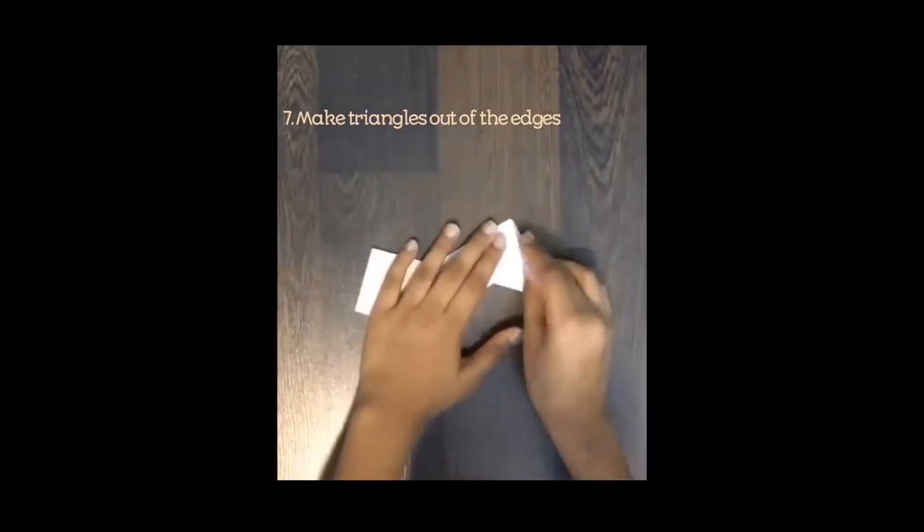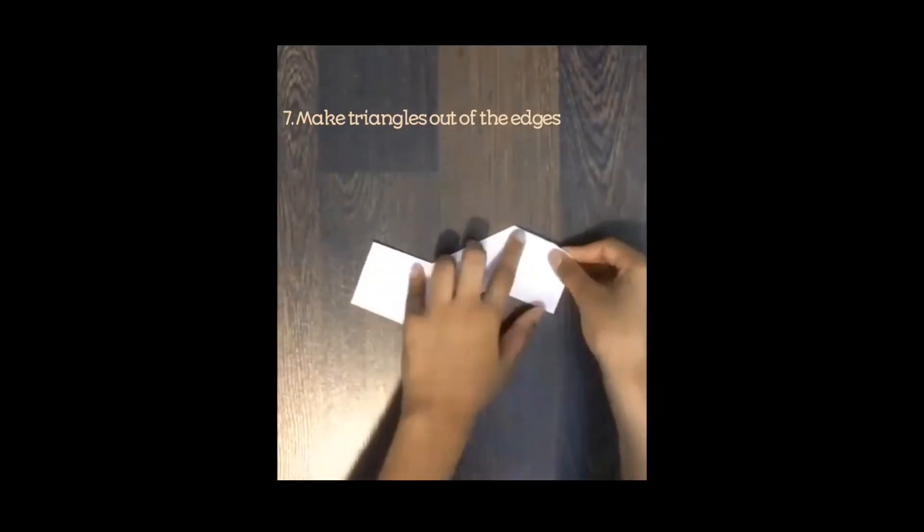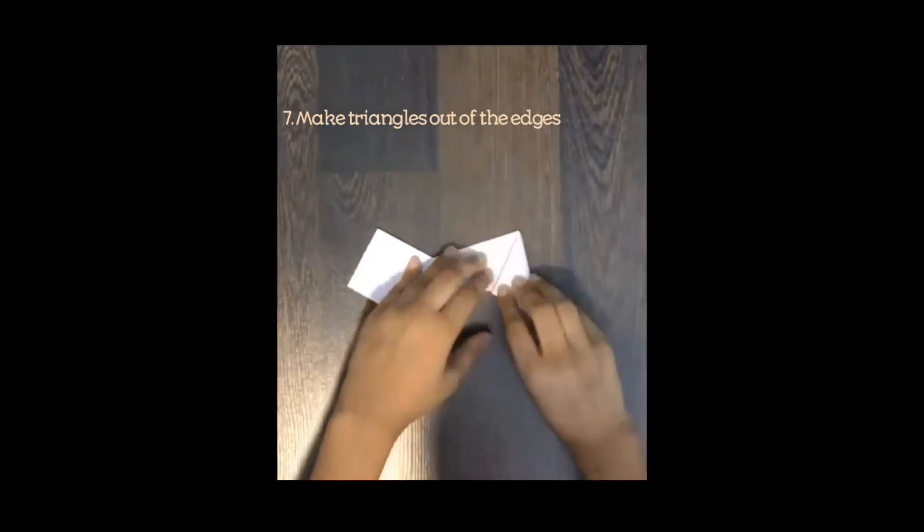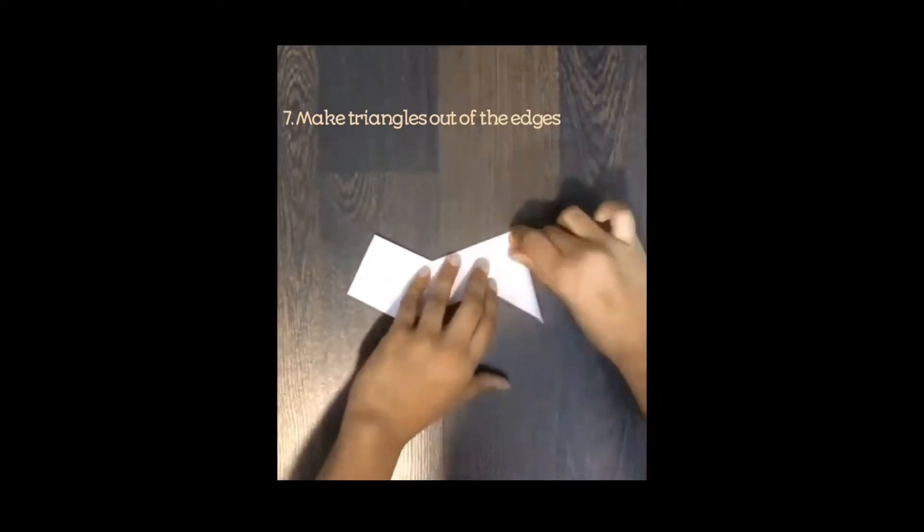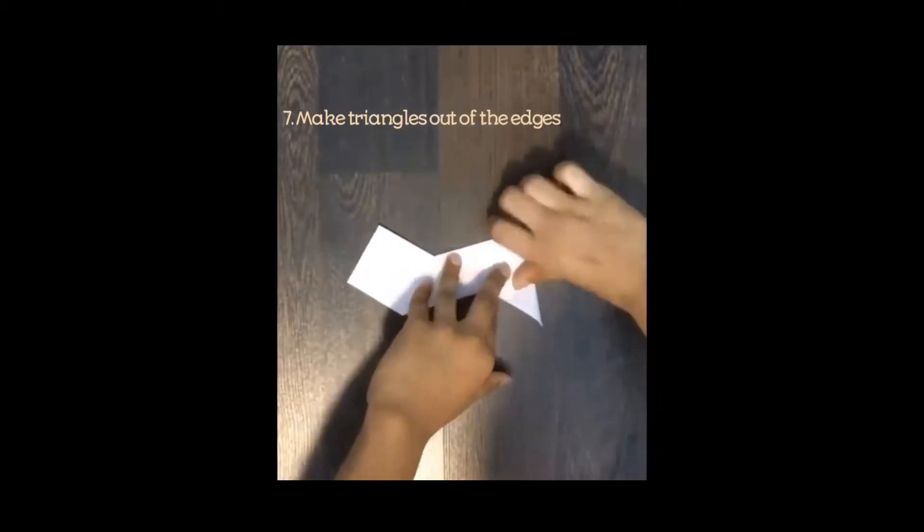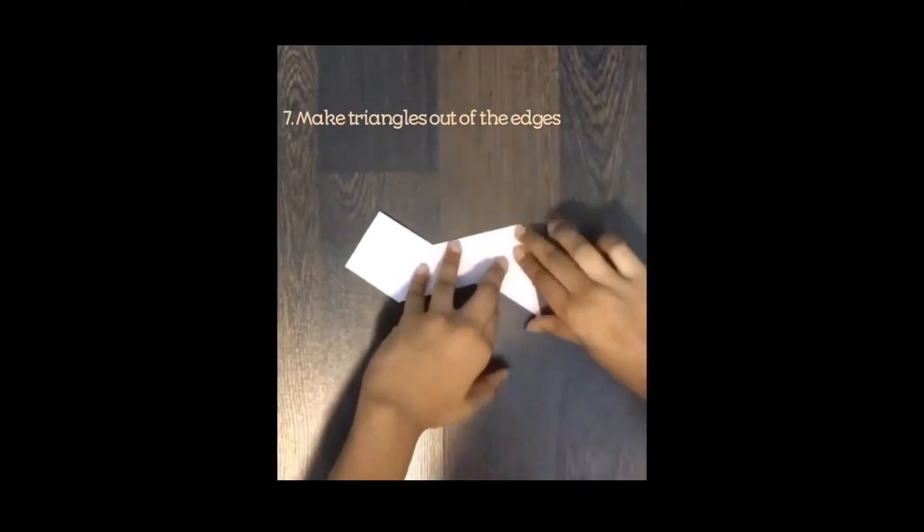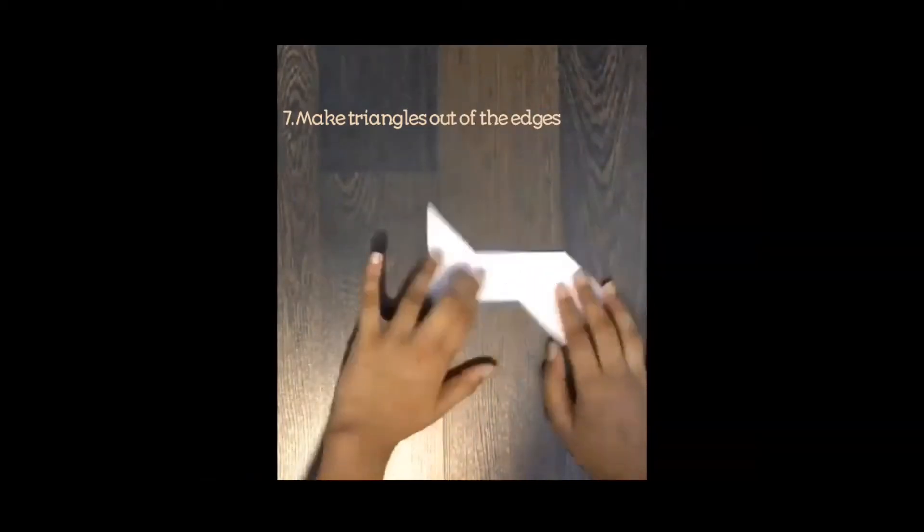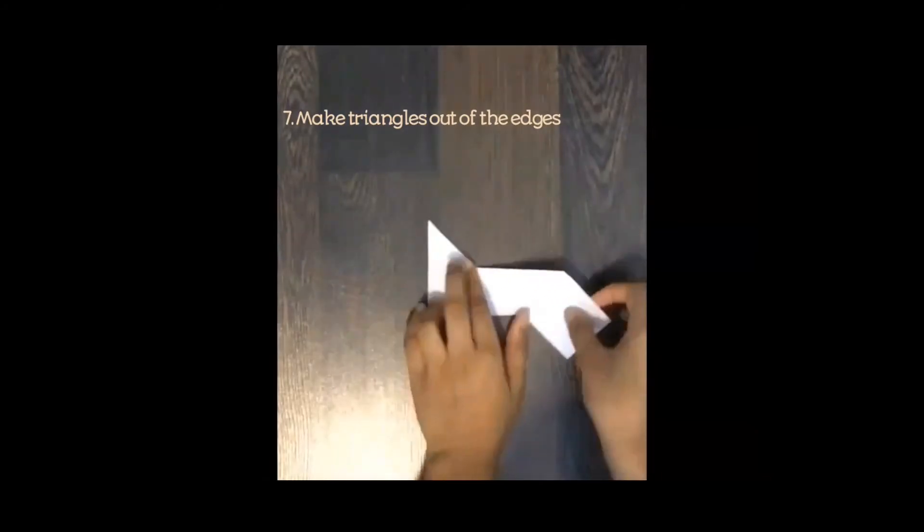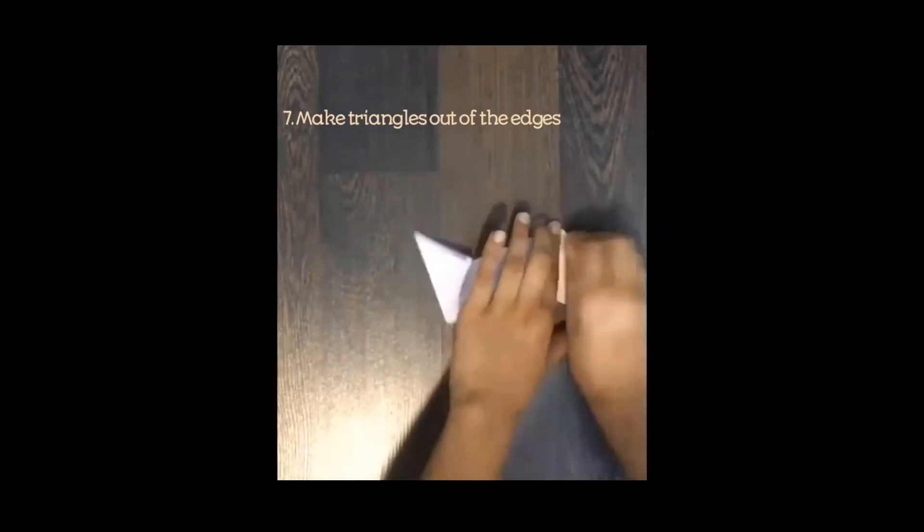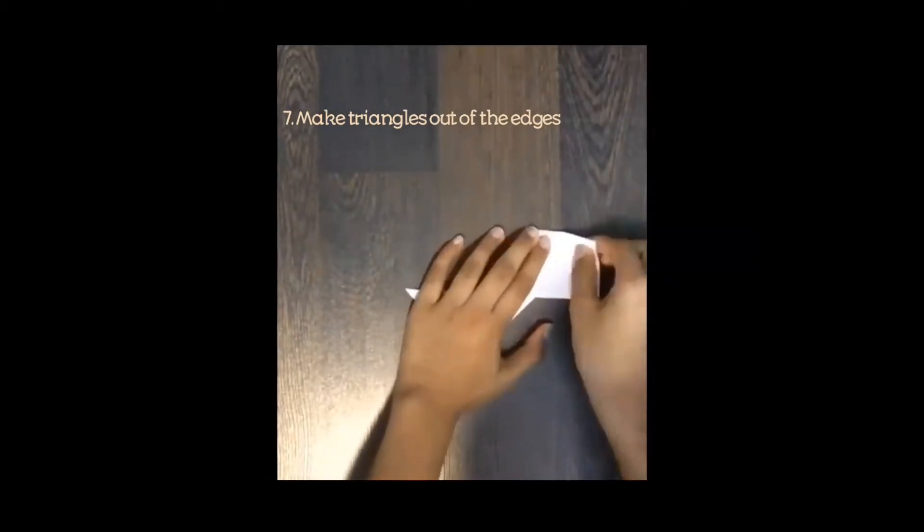Keep the other one aside. Bend it properly. It may take a little bit of time, but please do do it again and again if you want to get some practice. After all, practice makes a man perfect. Now do the same for this side. It has to look like an arrow on both the sides after you bend it.